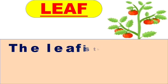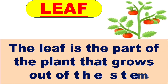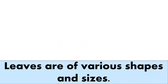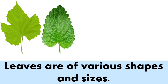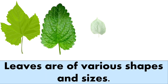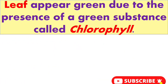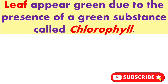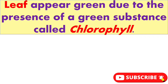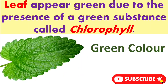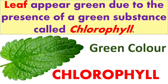Leaf is the part of a plant that grows out of the stem. Now if you look around, you will notice that leaves are of various shapes and sizes, and plants can be identified by looking at their leaves. Now dear children, do you know why leaves appear green? Yes, leaves appear green due to the presence of a green substance called chlorophyll.